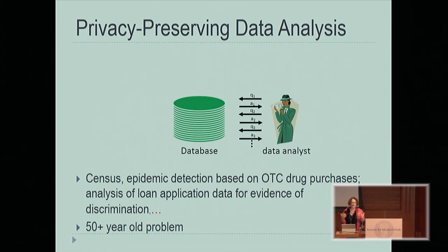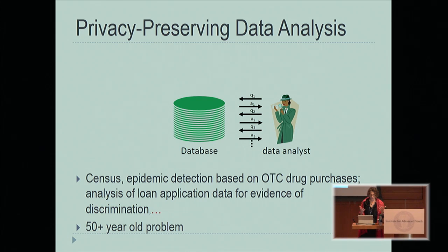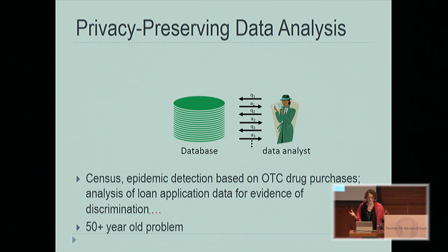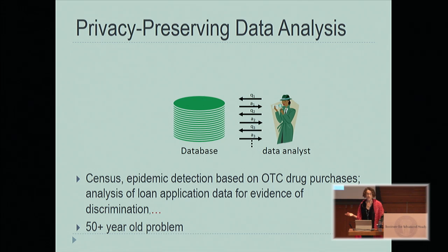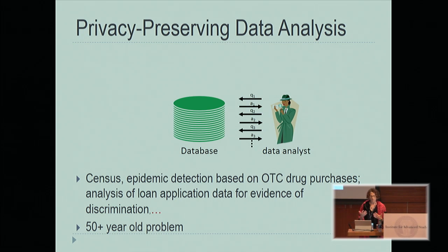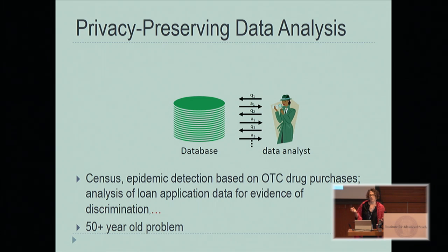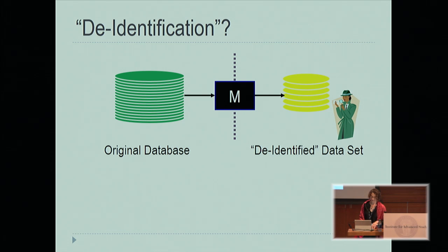So how can you analyze data while preserving privacy was the general topic? But of course, it goes way beyond census. You could use it for epidemic detection based on over-the-counter drug purchases — you'd like to keep the individual purchases private but see that there's an epidemic happening. Analysis of loan application data for evidence of systematic discrimination, and so on. This question of how to analyze data while preserving privacy is a very old question — at least 50 years old in the literature.